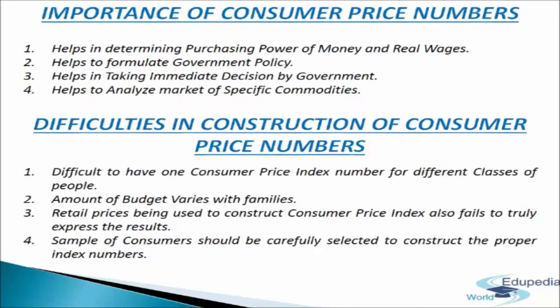Retail prices used to construct consumer price index also fail to truly express the results because retail prices of commodities are not fixed — they change with changes in demand and supply. Retail prices vary from shop to shop, place to place, and consumer to consumer; therefore index numbers prepared on such prices cannot be used for different places or different classes of people. Finally, the sample of consumers selected to construct the index number may fail to truly represent the class if sample selection is not done carefully.